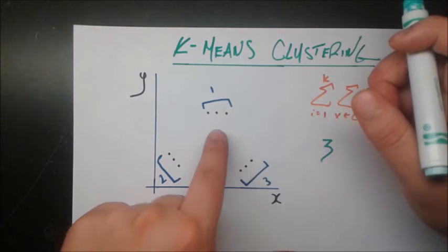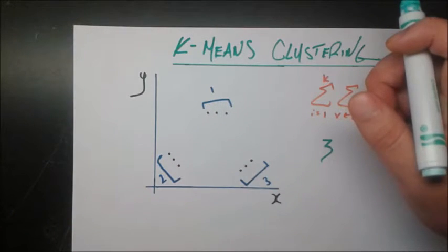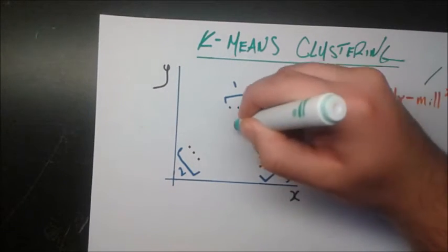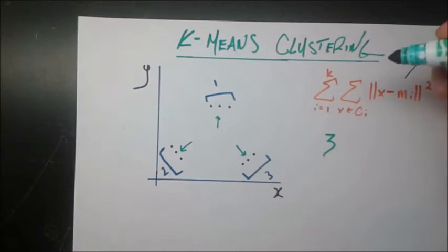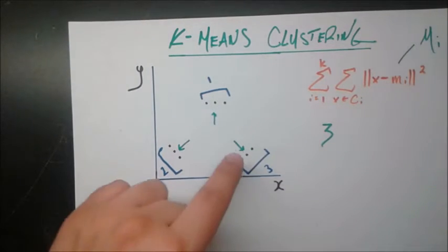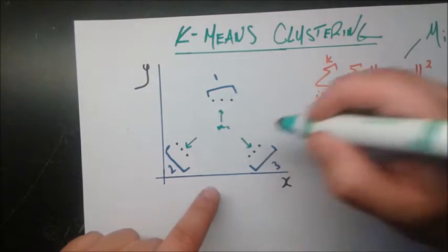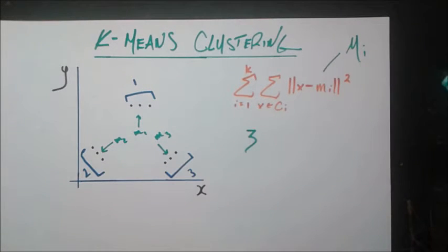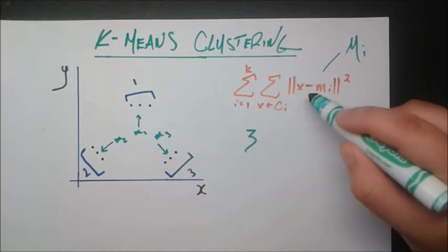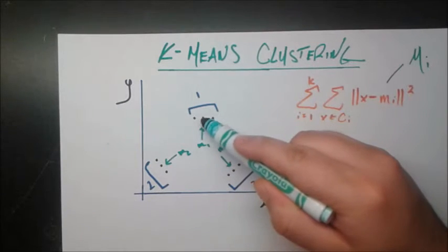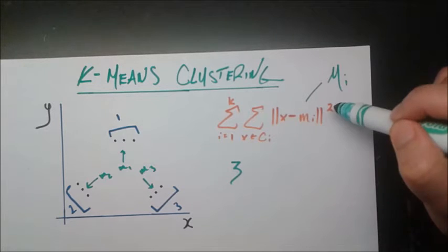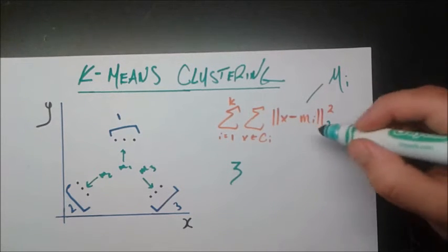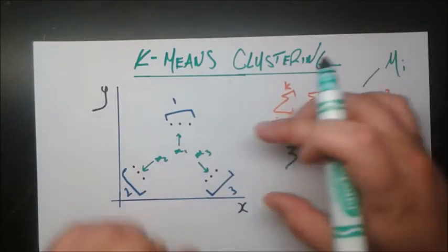K-means picks a point in each cluster as the midpoint — the mean. Naturally, the means will be the ones actually in the middle: this point here for cluster one, this one for cluster two, and this one for cluster three. It then takes the distance from all points within that cluster to that mean, squared — the L2 norm squared. This is summed over all three clusters.